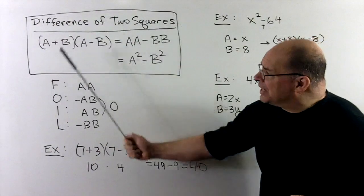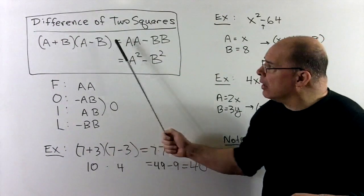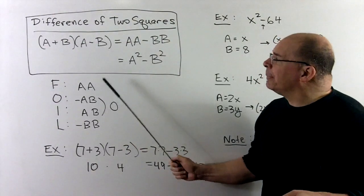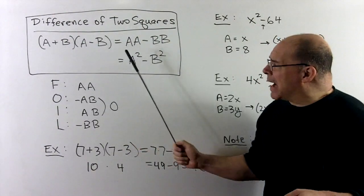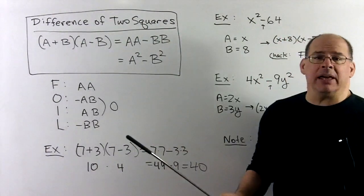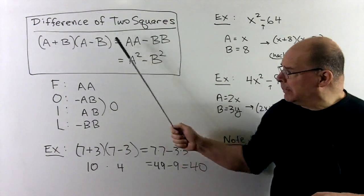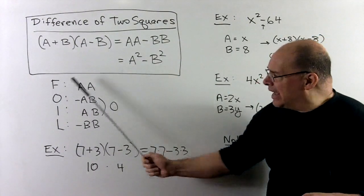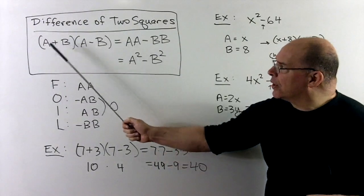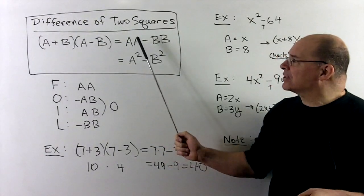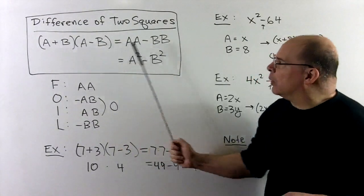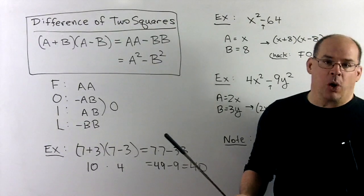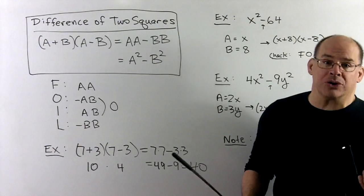To verify this, we just FOIL: first gives aa, outside gives −ab, inside gives ab, and last gives −bb. The outside and inside terms cancel out, leaving just the first and the last. You'll notice this is what you'd get if you were in a hurry FOILing and just took the first and last.